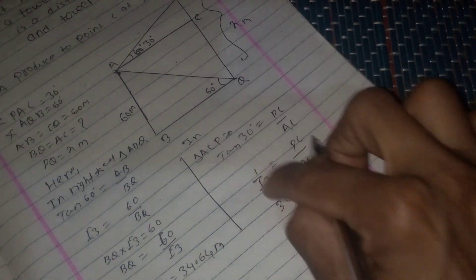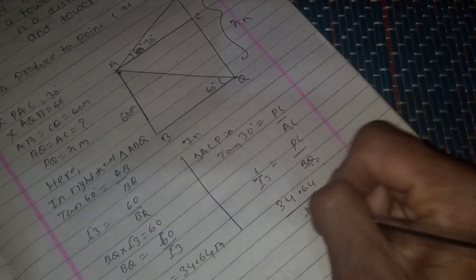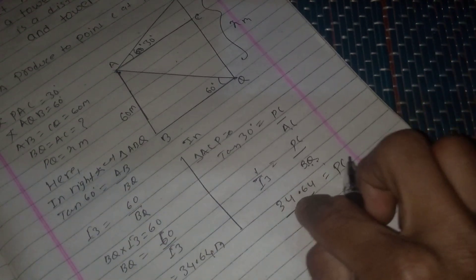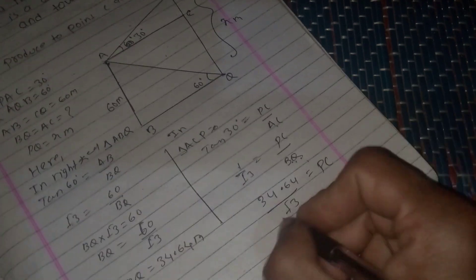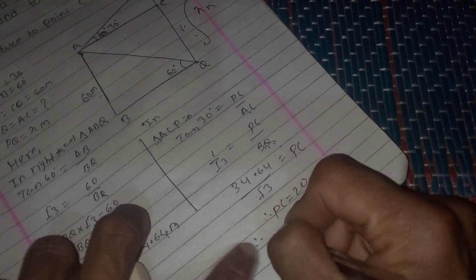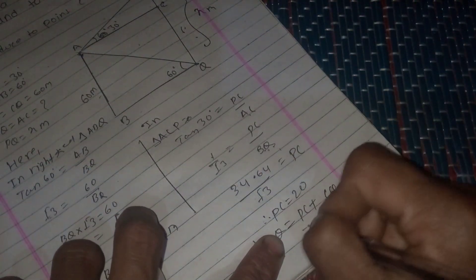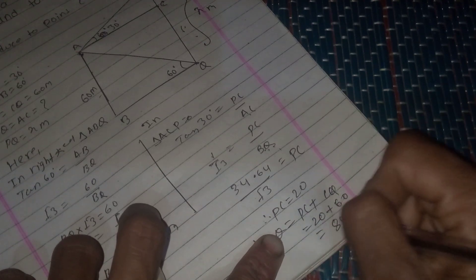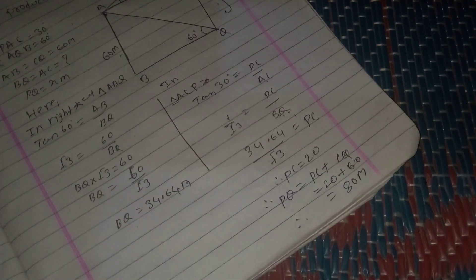So PC equals 60 divided by root 3 multiplied by 1 over root 3, which gives PC equals 20 meters. Therefore PQ equals PC plus CQ equals 20 plus 60 equals 80 meters. Hence the height of the tower is 80 meters and the distance between building and tower is 34.64 meters.